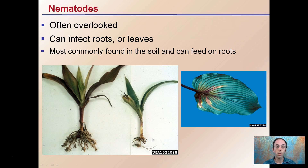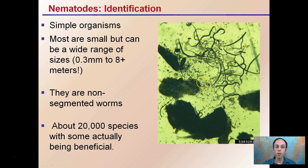Root knot nematode is one that's often talked about, but there are some that can infect the leaves as well. For identification, you can see these small worm-like structures — they are very simple organisms. Most are small but can range from 0.3 millimeters to up to 8 meters long. So keep in mind that size isn't necessarily a way to positively identify these because the range is so wide.